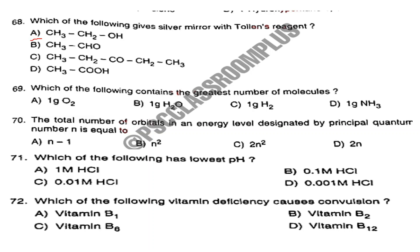Question number 69. Which of the following contains the greatest number of molecules? Answer is Option B: 1 gram H₂O. Question number 70. The total number of orbitals in an energy level designated by principal quantum number N is equal to? The answer is Option B: N².